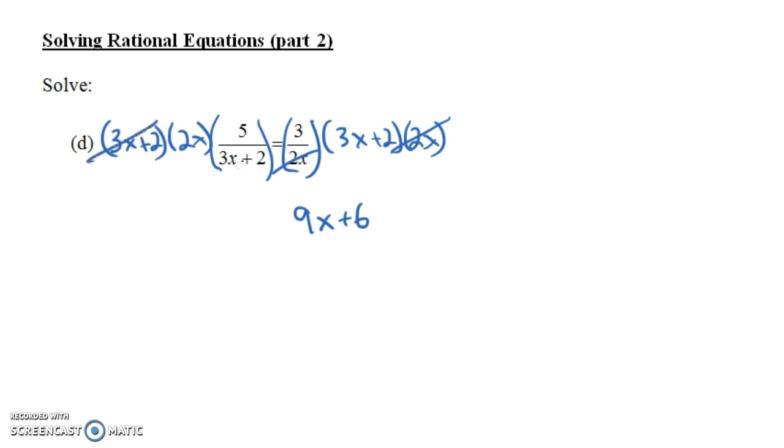On the left side, the 3x plus 2's go away, and we're just left with 2x times 5, and that's 10x. So notice what you ended up getting was 5 times 2x equals 3 times 3x plus 2. That's the same thing that you would have gotten if you had done cross-multiplication.